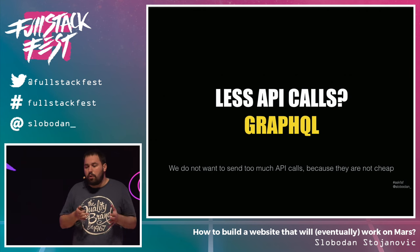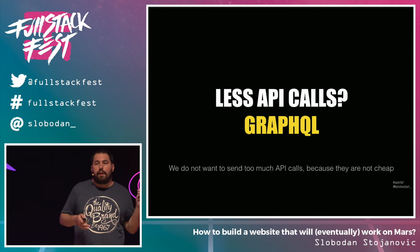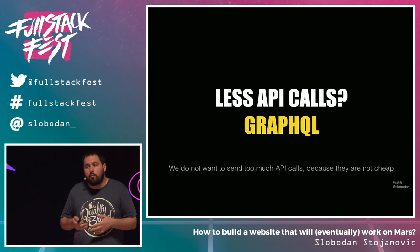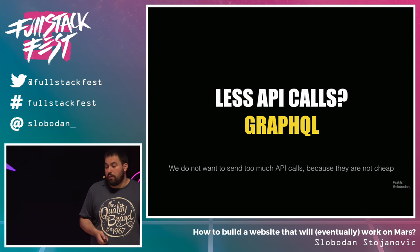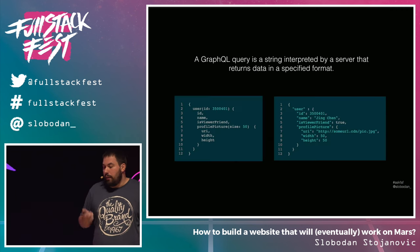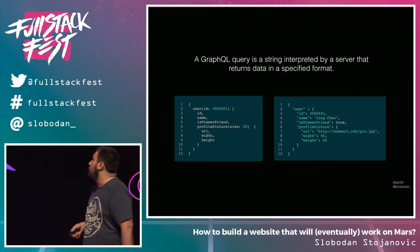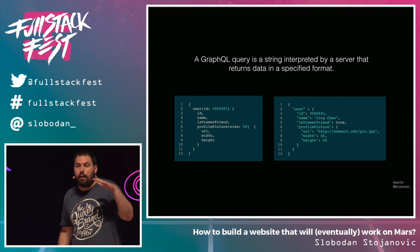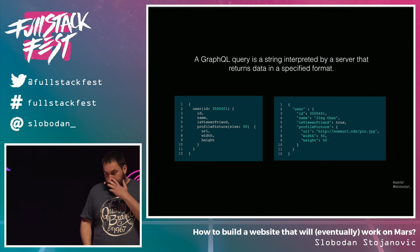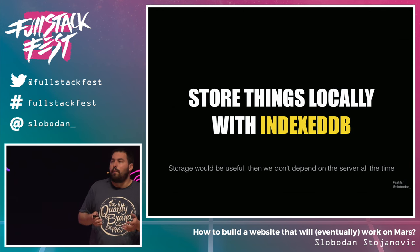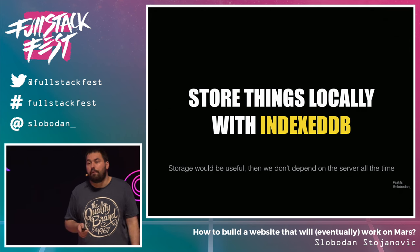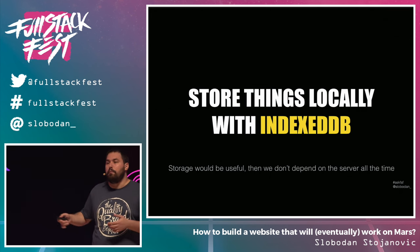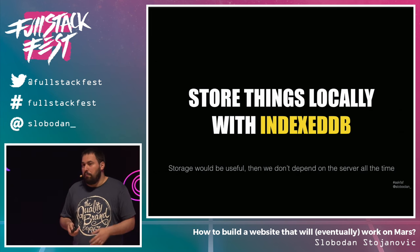You don't want to send a lot of API requests to the server because if anything goes to Earth, you need to wait a long time. And on Mars, you don't want to put too much pressure on the server since everyone is using the same limited infrastructure. So you can use GraphQL — instead of classic REST API calls, you can request exactly what you need for a given view and store that locally. It's also good to have a local copy of the data; for that you can use IndexedDB. It's not working perfectly in all browsers, but it will be better by the time we move to Mars.